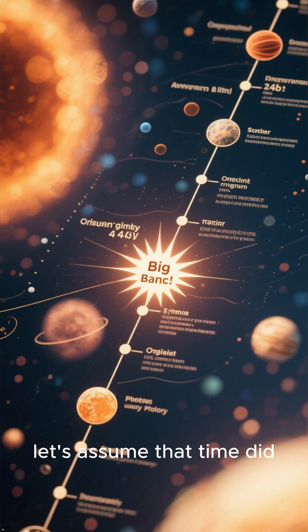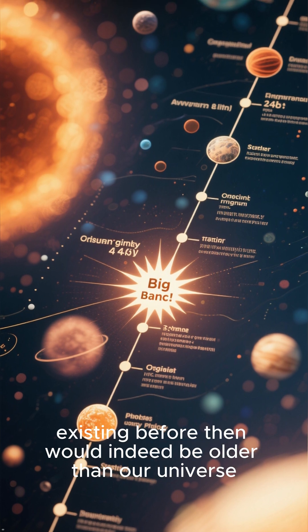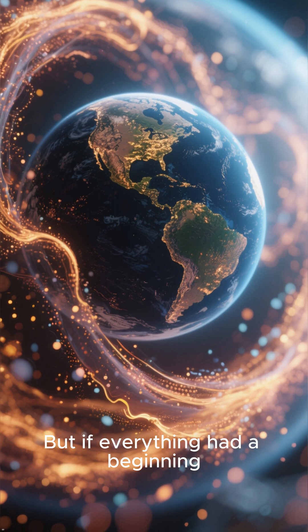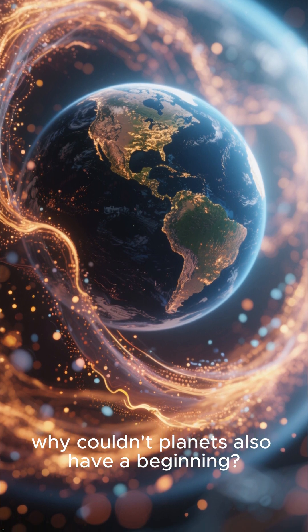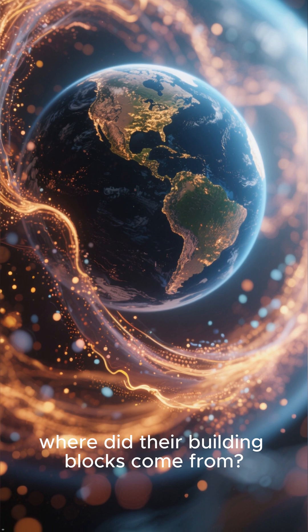For simplicity's sake, let's assume that time did begin with the Big Bang. So anything existing before then would indeed be older than our universe. But if everything had a beginning, why couldn't planets also have a beginning? And if they did, where did their building blocks come from?